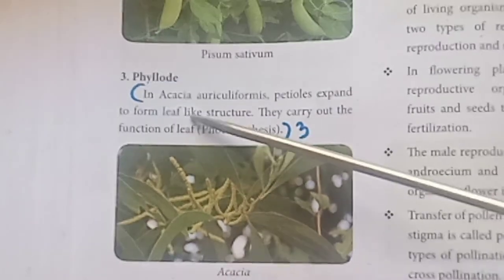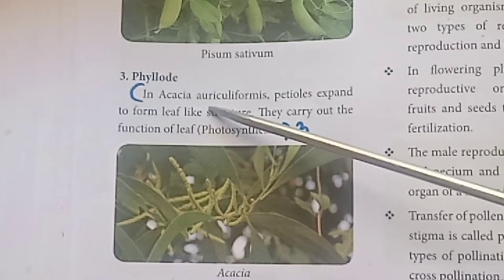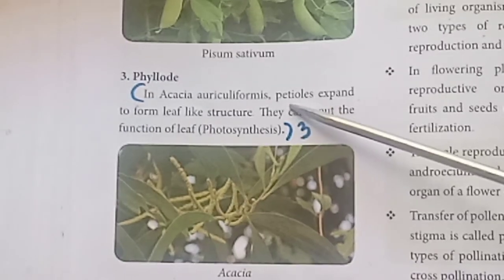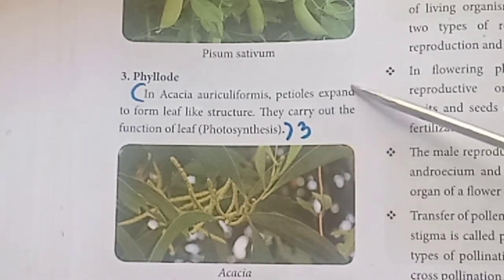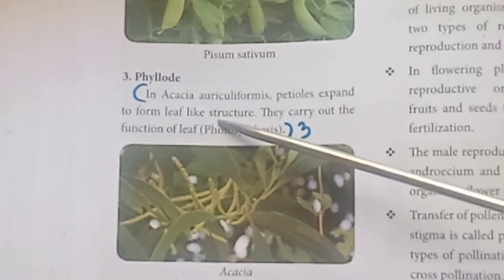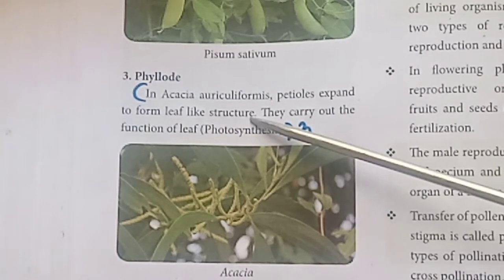Phyllode. In Acacia auriculiformis, the petioles expand to form a leaf-like structure called a phyllode.